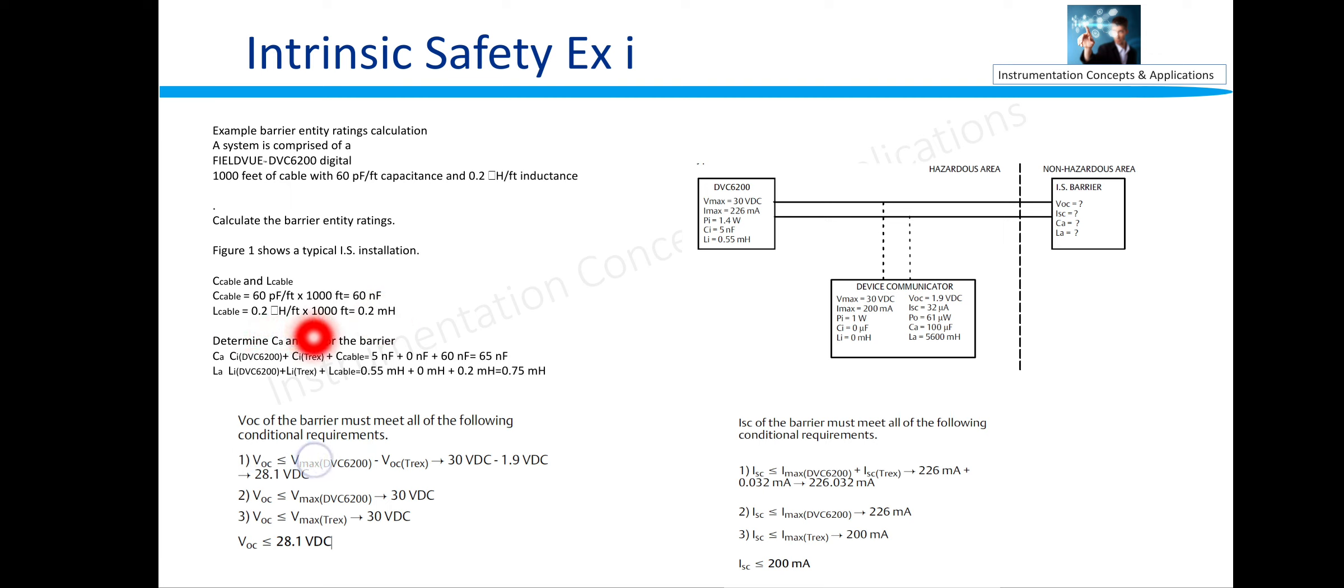The CA of the intrinsically safety barrier will be 5 nanofarad plus 0 nanofarad of the Trex device plus 60 nanofarad of cable, that is 65. Likewise LA, inductance of the IS barrier will be 0.55 millihenry plus 0.0 millihenry and 0.2 millihenry, that is 0.75 millihenry.